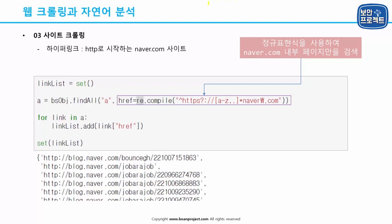하이퍼링크 중 HTTP로 시작하는 네이버 닷컴 사이트를 조사할 때는 정규 표현식을 사용합니다. 이 정규식은 HTTPS로 시작하고 - 물음표로 S는 있어도 없어도 되며 - 중간에 a부터 z까지 어떤 글자가 몇 번 반복되어도 상관없고, 뒤에는 무조건 naver.com이 나오도록 설정했습니다. 이것이 BeautifulSoup의 FINDALL에서 a 태그의 href 속성 조건으로 들어간 것입니다. 즉 FINDALL에 정규 표현식도 적용할 수 있다는 것입니다.